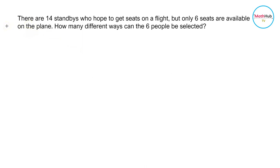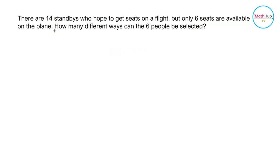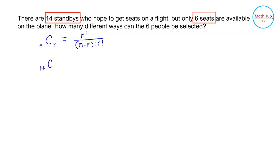Let's now consider another problem. There are 14 standbys who hope to get seats on a flight, but only 6 seats are available on the plane. Since there is no mention that the order is important, or the order in which the 6 seats are to be given to 14 standbys, therefore this problem is a problem on combination. To solve this, we will use the combination formula. We have 14 standbys and 6 available seats, meaning only 6 people will be chosen from 14. So we have 14 taken 6.